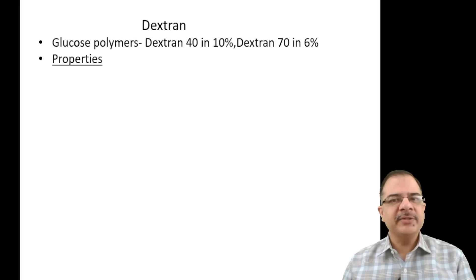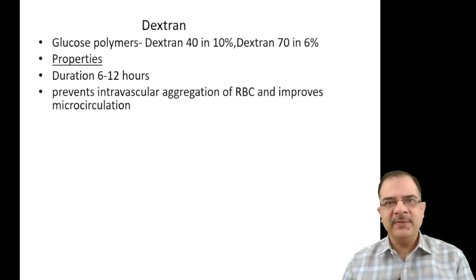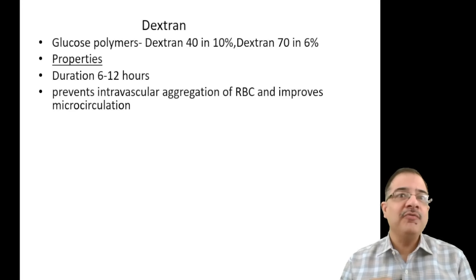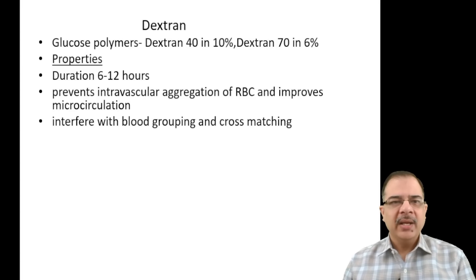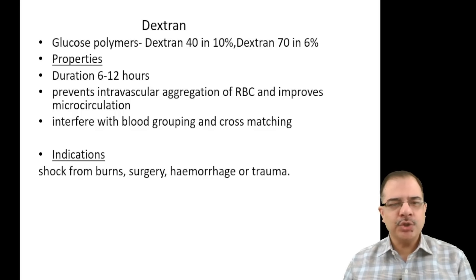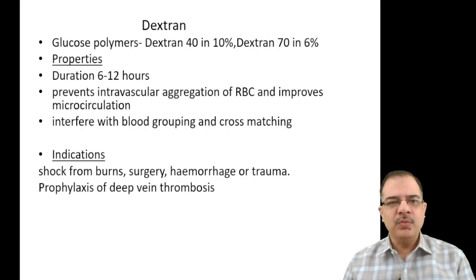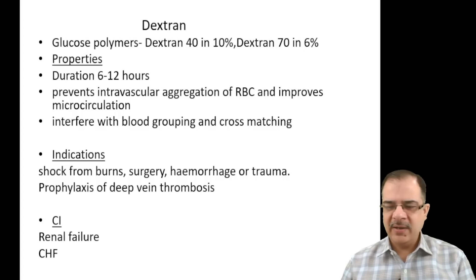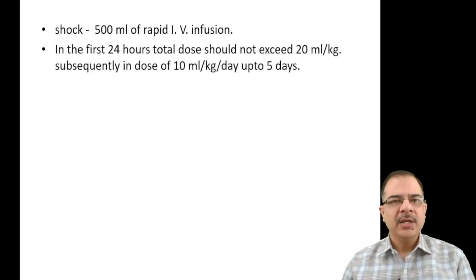Dextran is a glucose polymer available as dextran 40 and dextran 70. Duration of action is 6 to 12 hours. It prevents intravascular aggregation of RBCs, making it very useful for prevention of thromboembolism. However, it interferes with blood grouping and cross-matching — so collect blood samples before infusing dextran. Indications are shock from burns, surgery, hemorrhage, or trauma, and prophylaxis for deep vein thrombosis. Contraindications are renal failure and CHF.